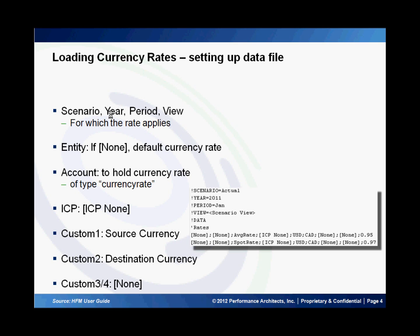If we pick none for the entity, the rates that are being loaded will be the default currency rate for the entire application. You can however overwrite the default currency rate by picking your specific entity. The next dimension is the value dimension, which will be picked as none. Then we specify the account which will hold the rate — in this case average rate and spot rate. For ICP or intercompany partner we pick ICP none. Then we mention the source currency and the target or destination currency as the custom 1 and custom 2 members, and for custom 3 and 4 we choose none.